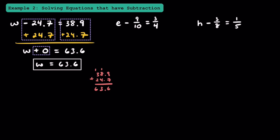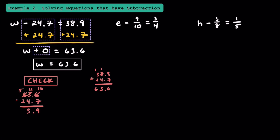This is the only value for w that makes this equation true. Don't forget that it's your responsibility to plug in your answer to make sure it works. Let's substitute 63.6 back in for w and subtract 24.7 to see if it equals 38.9. After borrowing to subtract, 63.6 minus 24.7 does equal 38.9, so we know our answer is correct.